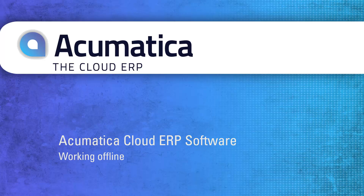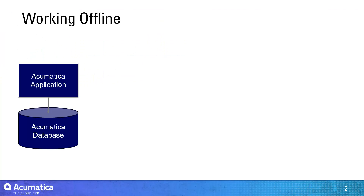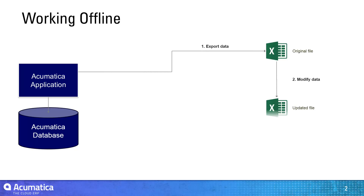Working Offline. Acumatica makes it easy to import and export data from grids so you can work offline. This is useful if you are in a location without an internet connection. In this example, I will modify the chart of accounts by downloading existing information, making modifications, and uploading my changes.